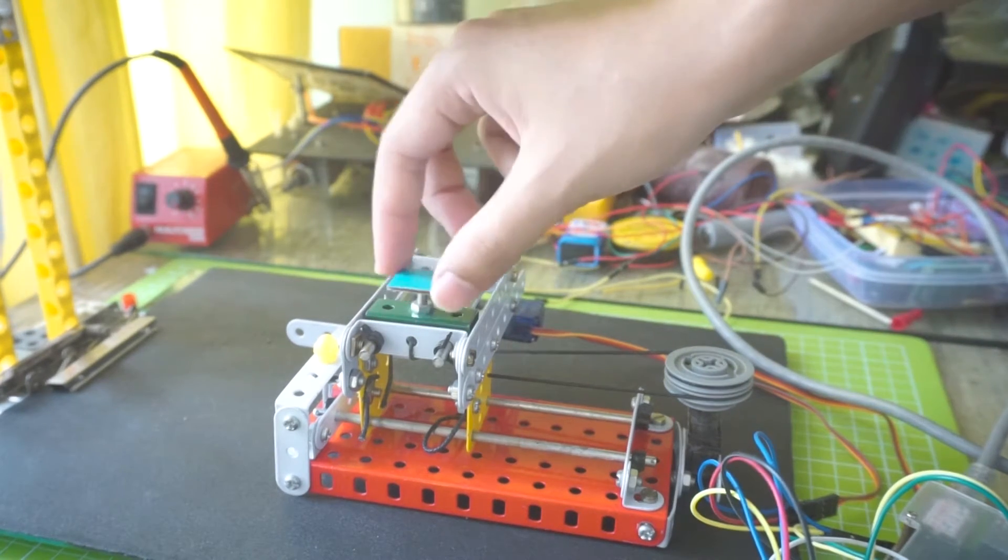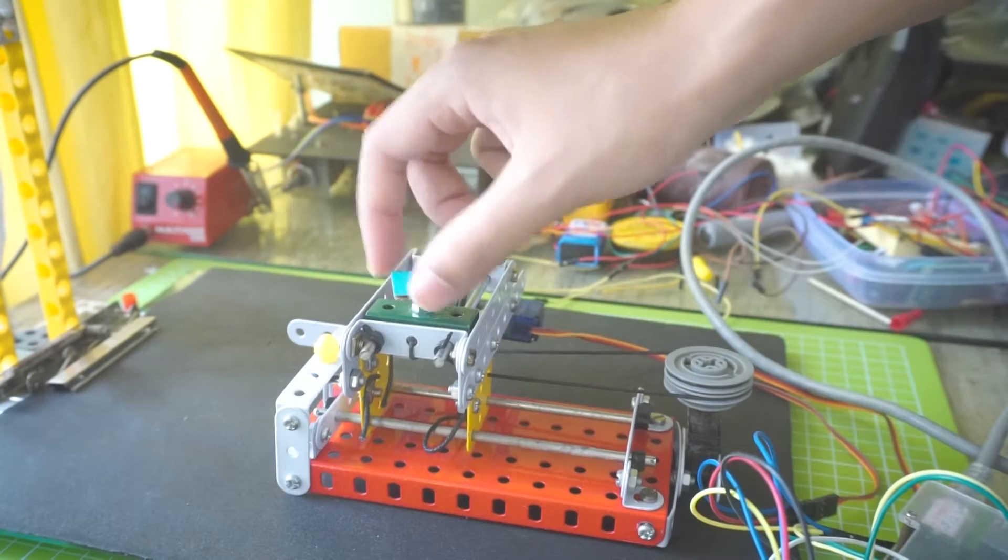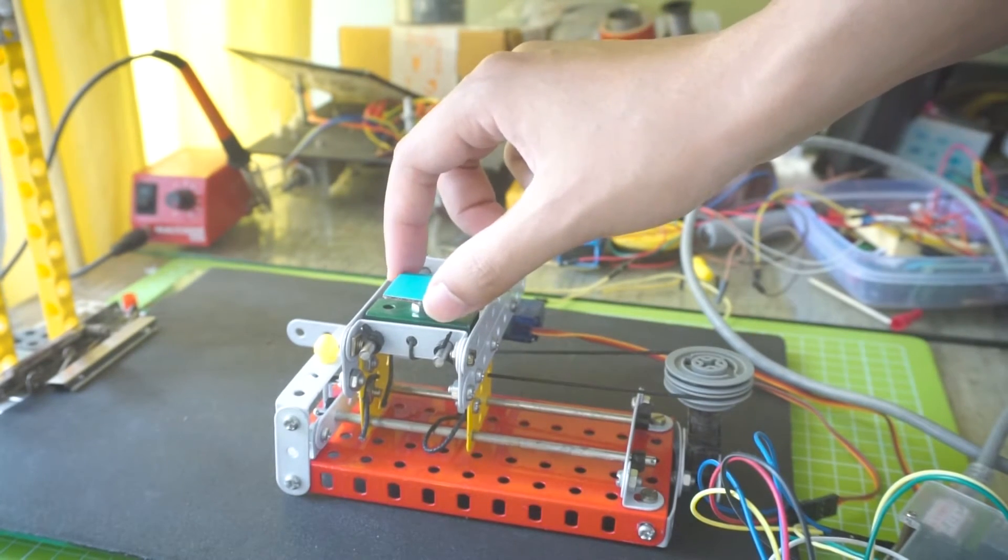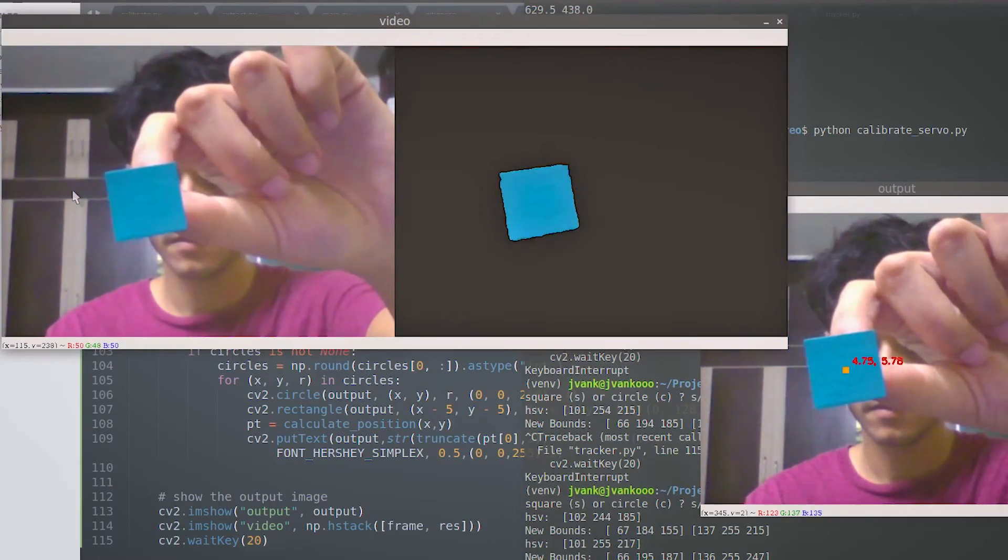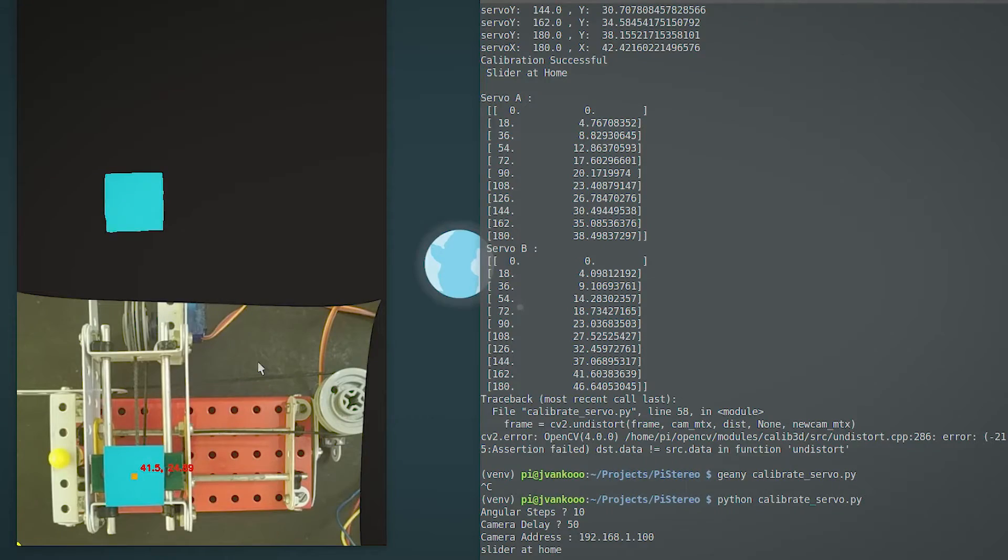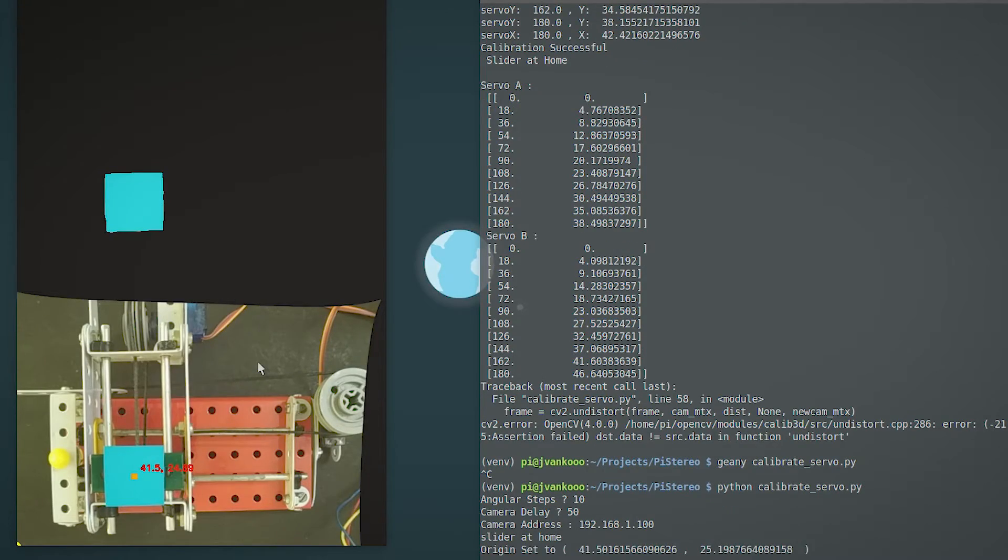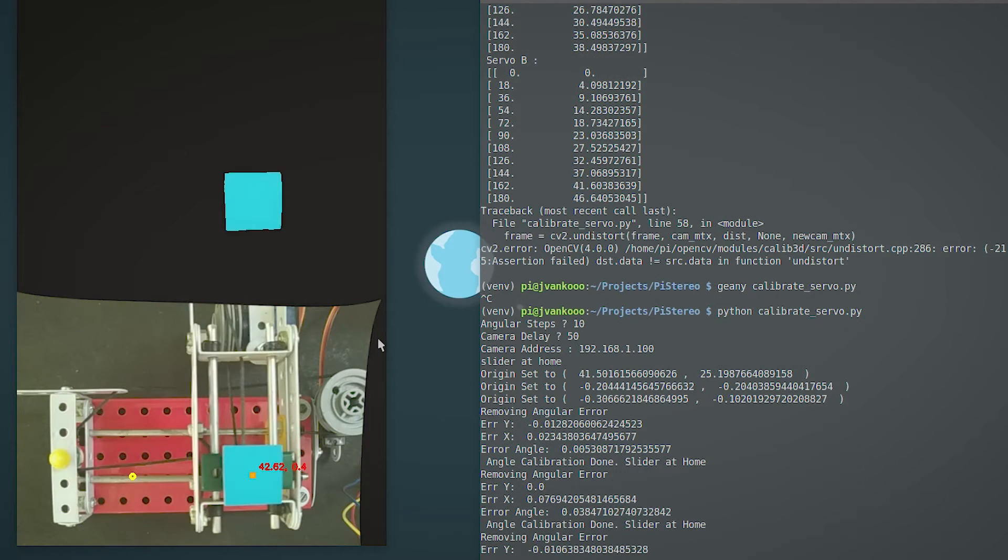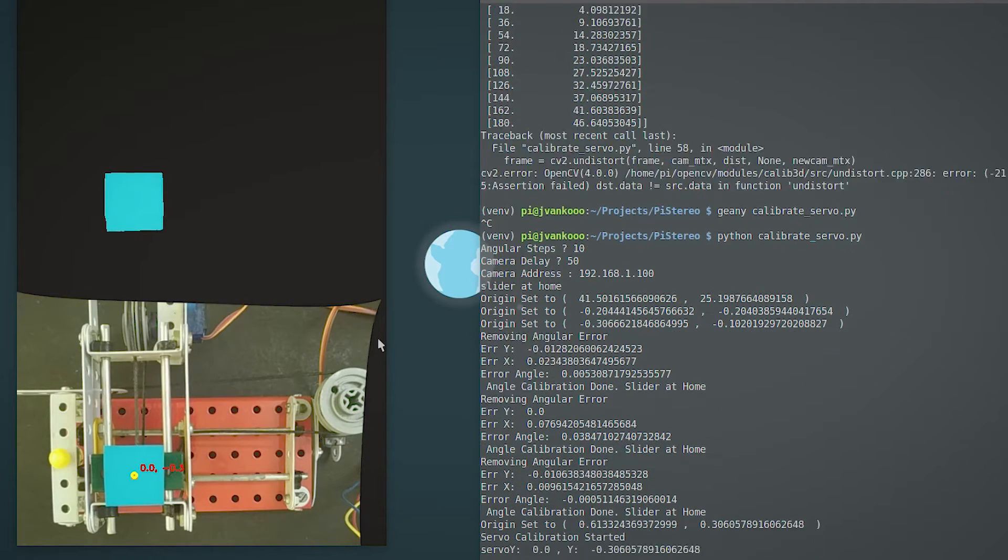Now I need to track the movements of the slider for every input angle of the servos. For this, I segmented out a blue tracker and now I'm able to get its real-world 2D coordinates. I wrote a script to set the origin at servo 0, fix any zero errors, both angular and axial, and then track the slider for every step till 180 degrees.